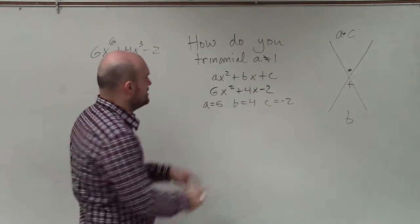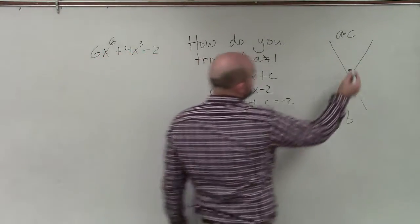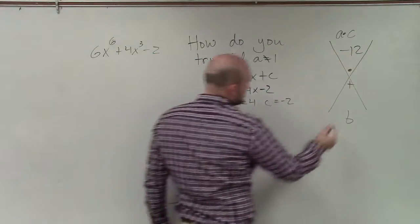Now, moving forward with this, I need to multiply a times c, which is going to be negative 12. And then I write down my b, which is 4.